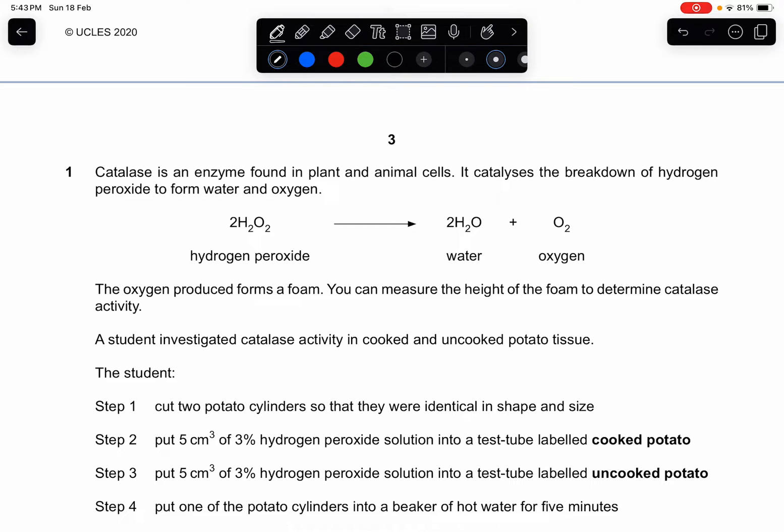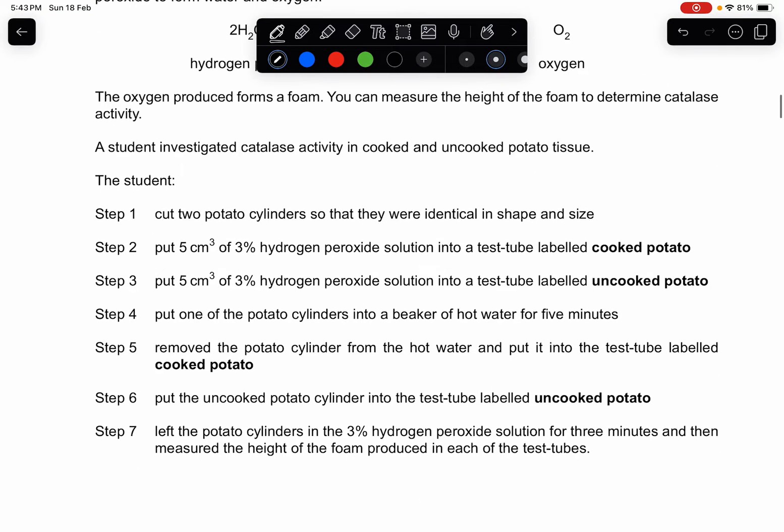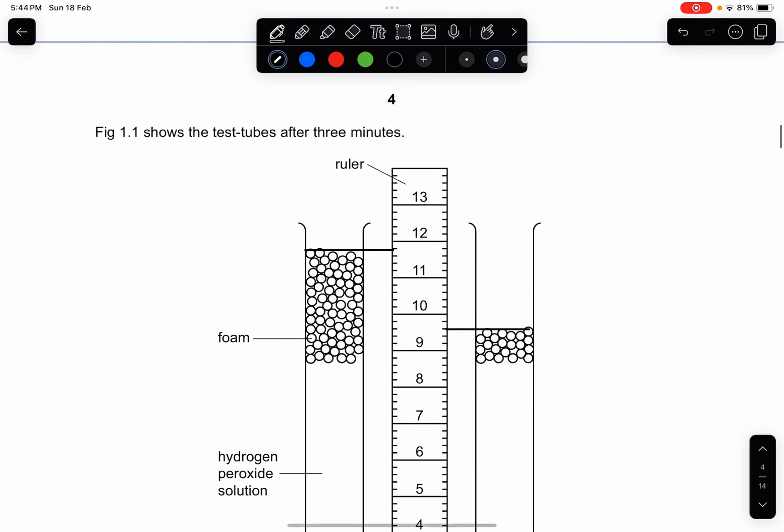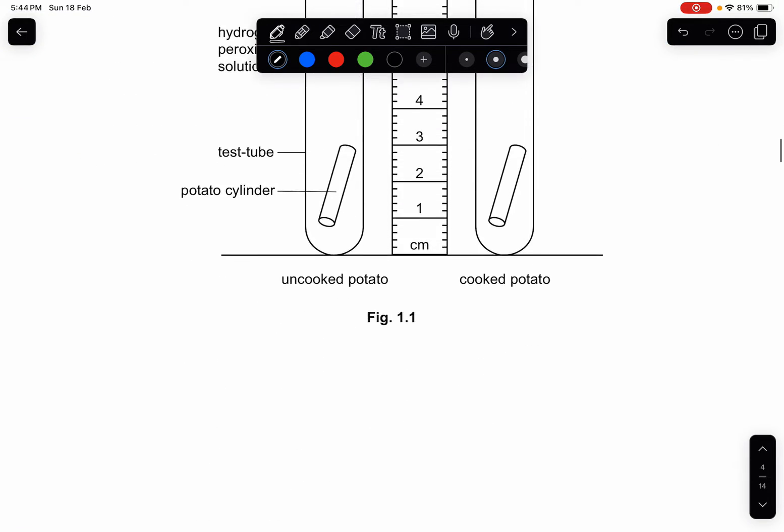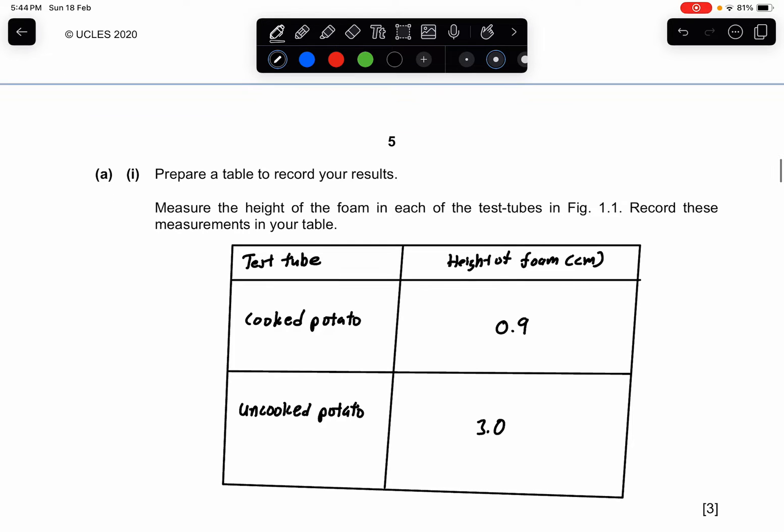Question 1: catalase is an enzyme found in plant and animal cells. It catalyzes the breakdown of hydrogen peroxide to form water and oxygen. The oxygen produced forms a foam. You can measure the height of the foam to determine the catalase activity. A student investigated the catalase activity in cooked and uncooked potato tissue. Figure 1.1 shows the test tubes after 3 minutes. Part 1: prepare a table to record your results. Measure the height of the foam in each of the test tubes in figure 1.1. Record these measurements in your table.